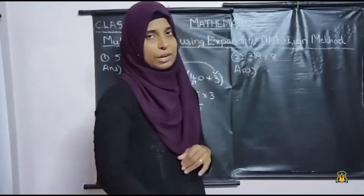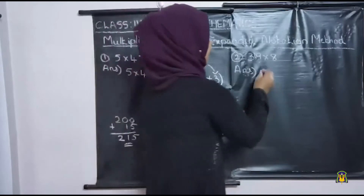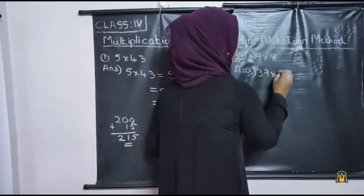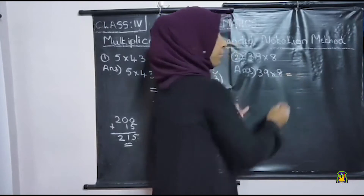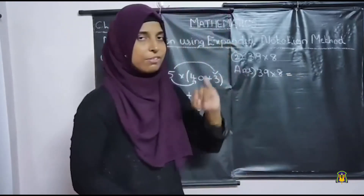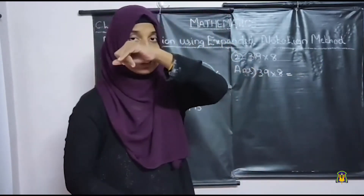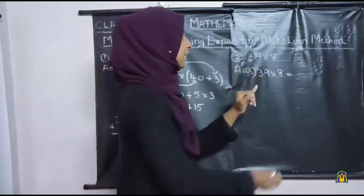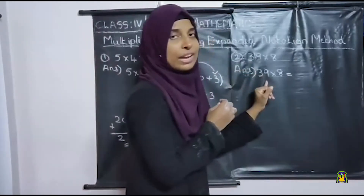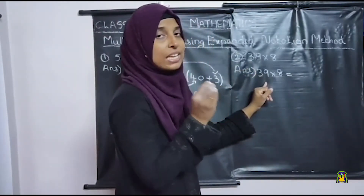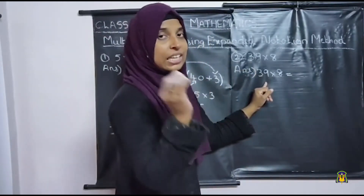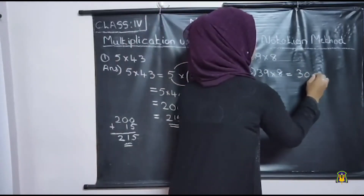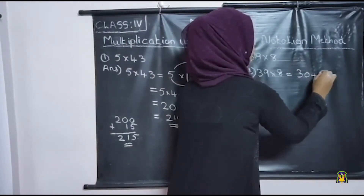We will do one more problem: 39 into 8. So the first step is we want to write 39 in its expanded notation. 39 — how can we write 39? That's 30 plus 9. So 30 plus 9, into 8.